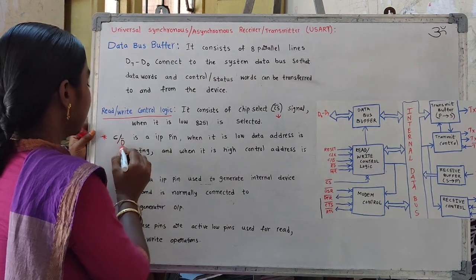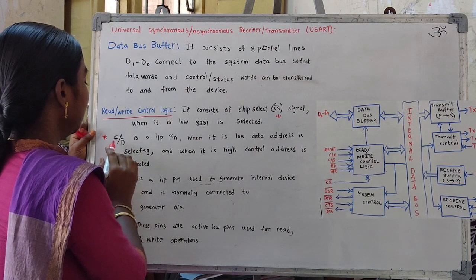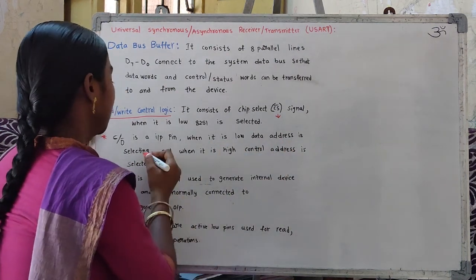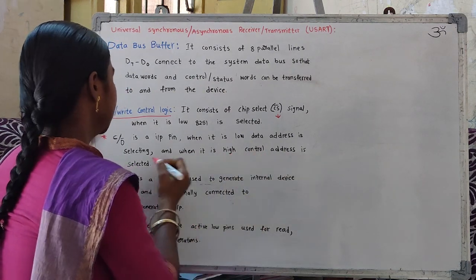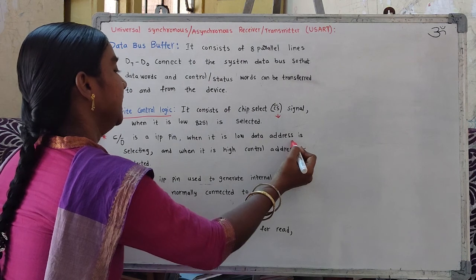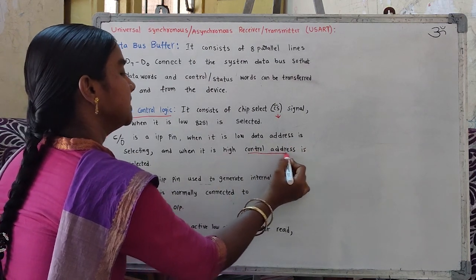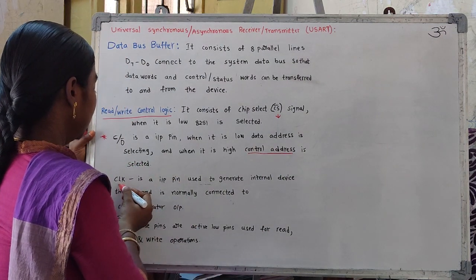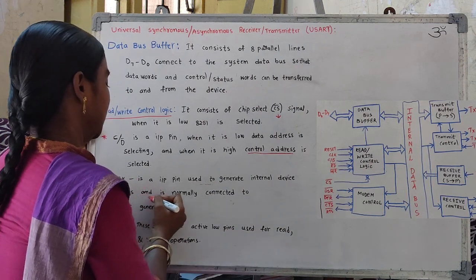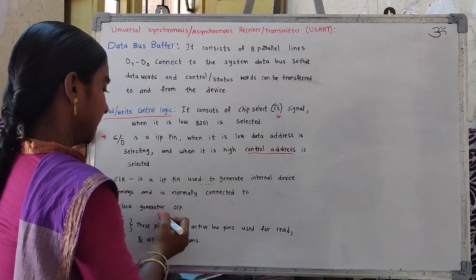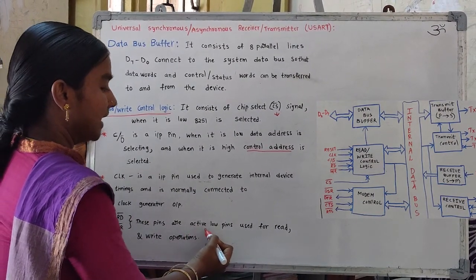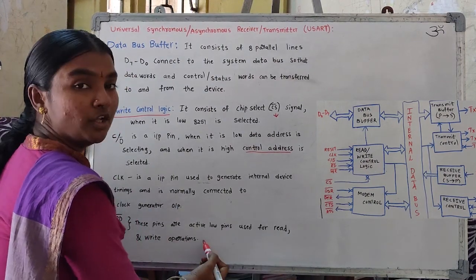The second pin is C/D, which indicates control or data. It is an input pin. When it is low, data address is selected; when it is high, control address is selected. Another pin is the clock pin, which is an input pin used to generate internal device timings and is normally connected to the clock generator output. The read and write pins are active low pins used for read and write operations.